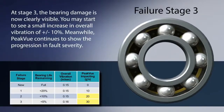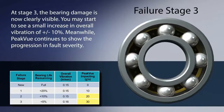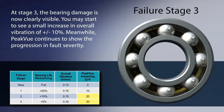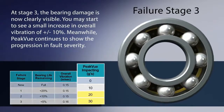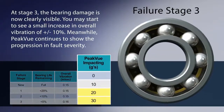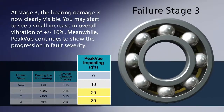At stage three, the bearing damage is now clearly visible. You may start to see a small increase in overall vibration of plus or minus 10%. Meanwhile, peak view continues to show the progression of fault severity.